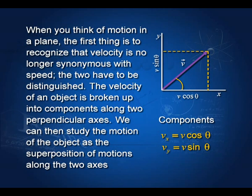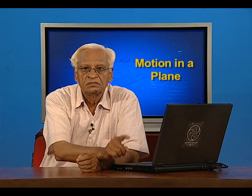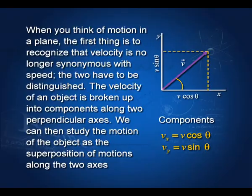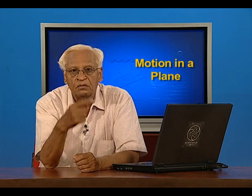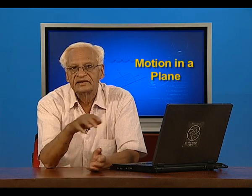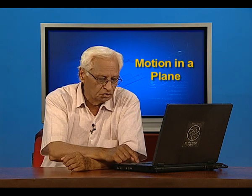In a plane, what we do is we take velocity in whatever direction it is and break it up into two components: one along the x-axis and the other along the perpendicular y-axis. The components are vx equal to v cos θ and vy equal to v sin θ. We study the motion along these two components independently and then later superimpose to find the actual motion of the body.